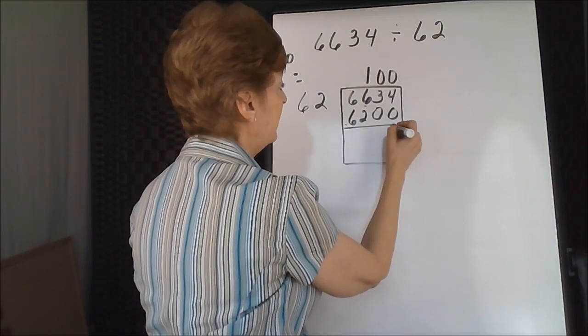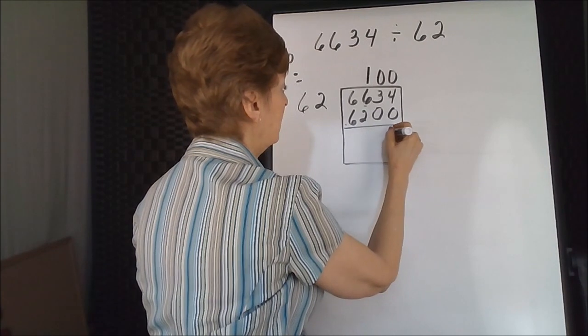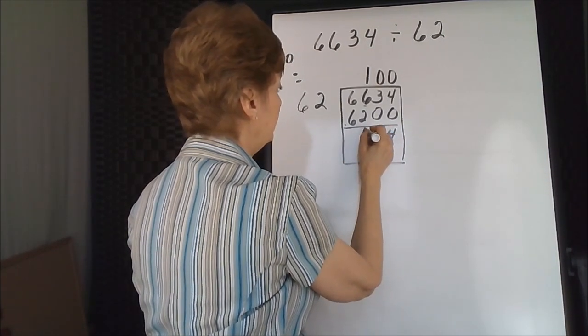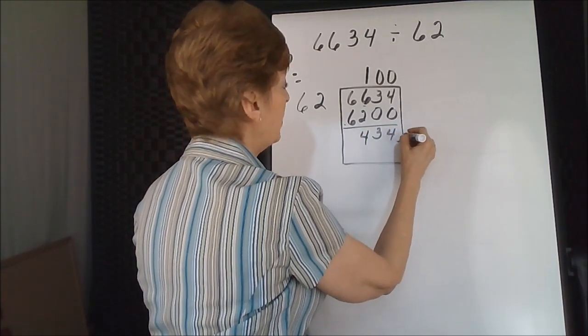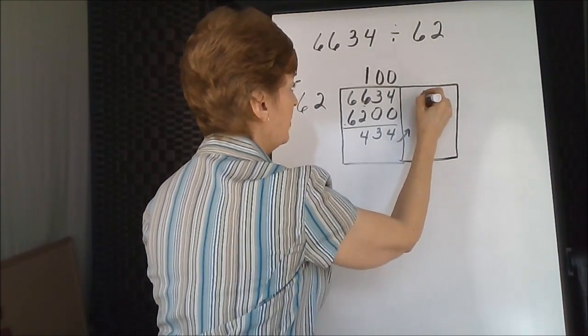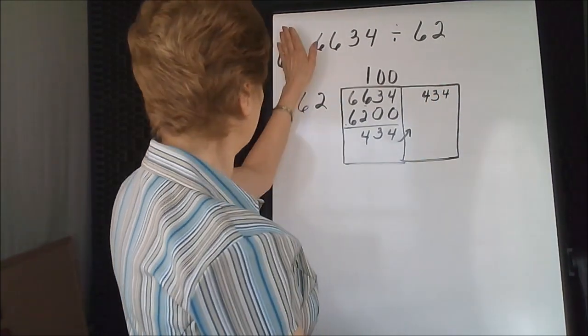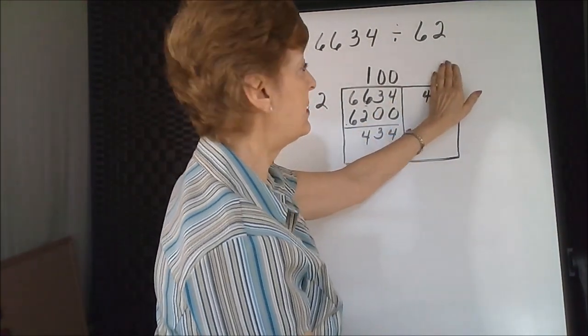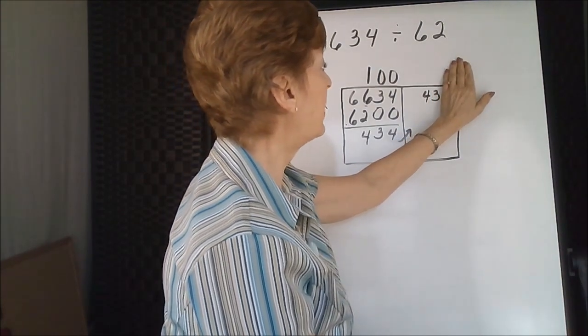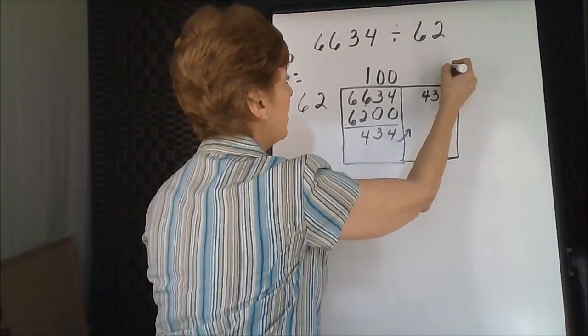Subtract. 4, 3, and 4, which goes to the next box. I'm going to bring the 434 up. 6 goes into 4, it is not. 6 goes into 43. Well, 7 times 6 is 42. Let's try a 7.